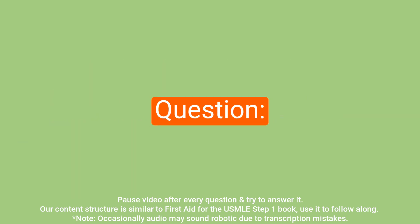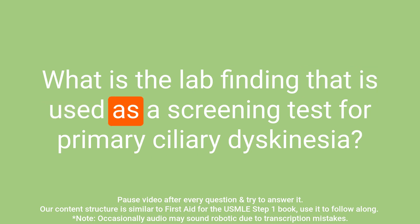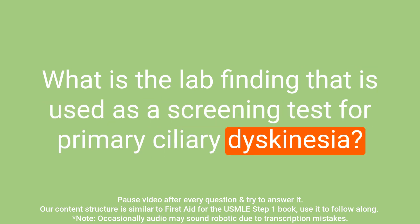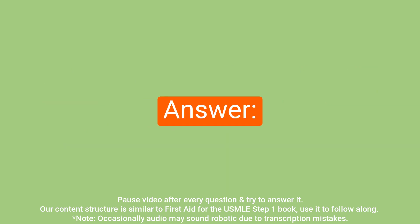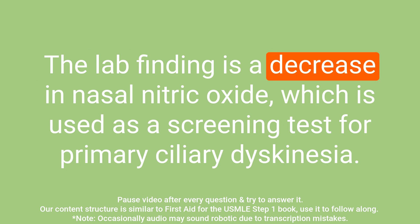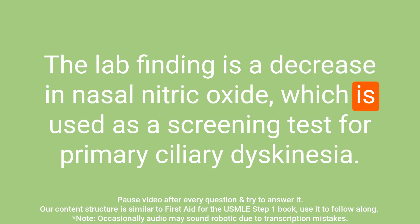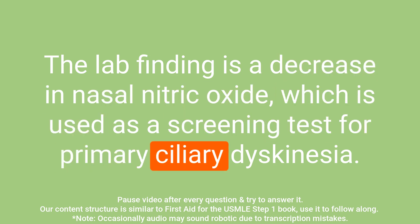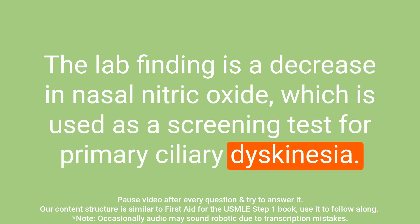Question: What is the lab finding used as a screening test for primary ciliary dyskinesia? Answer: The lab finding is a decrease in nasal nitric oxide, which is used as a screening test for primary ciliary dyskinesia.